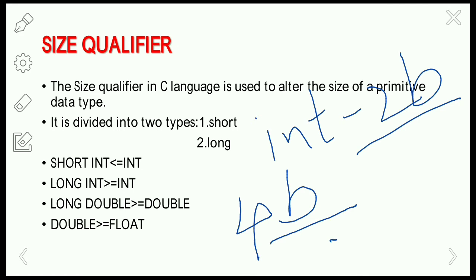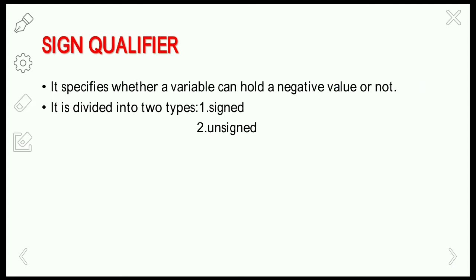Similarly, long double is greater than or equal to double, and double is greater than or equal to float. The size qualifier alters the size of primitive data types — int, long, short, double — all primitive data types.